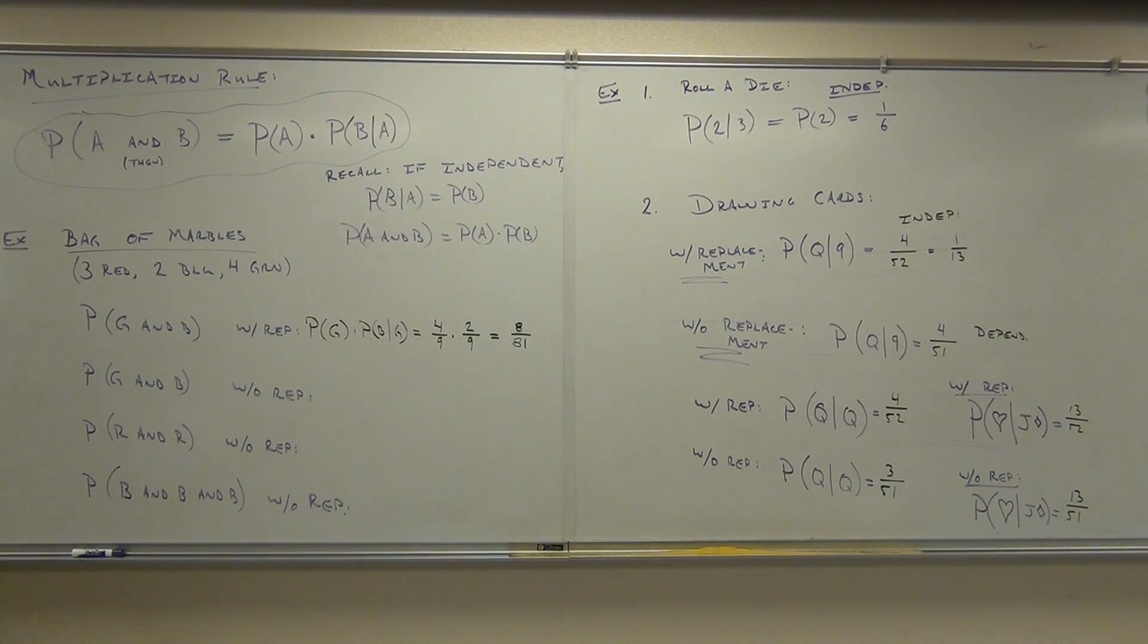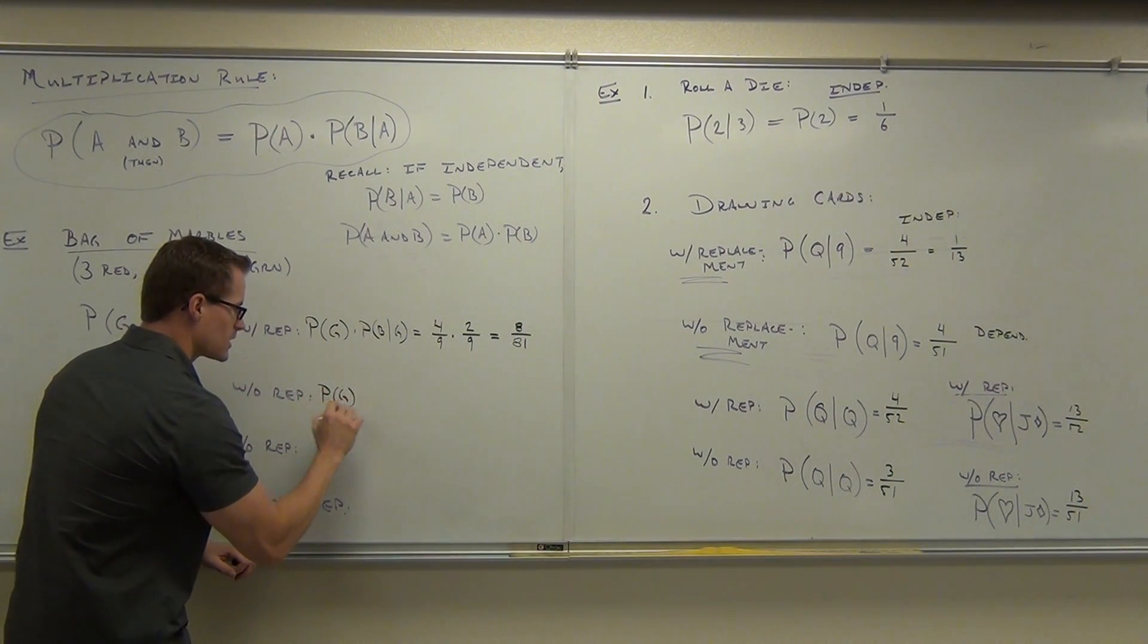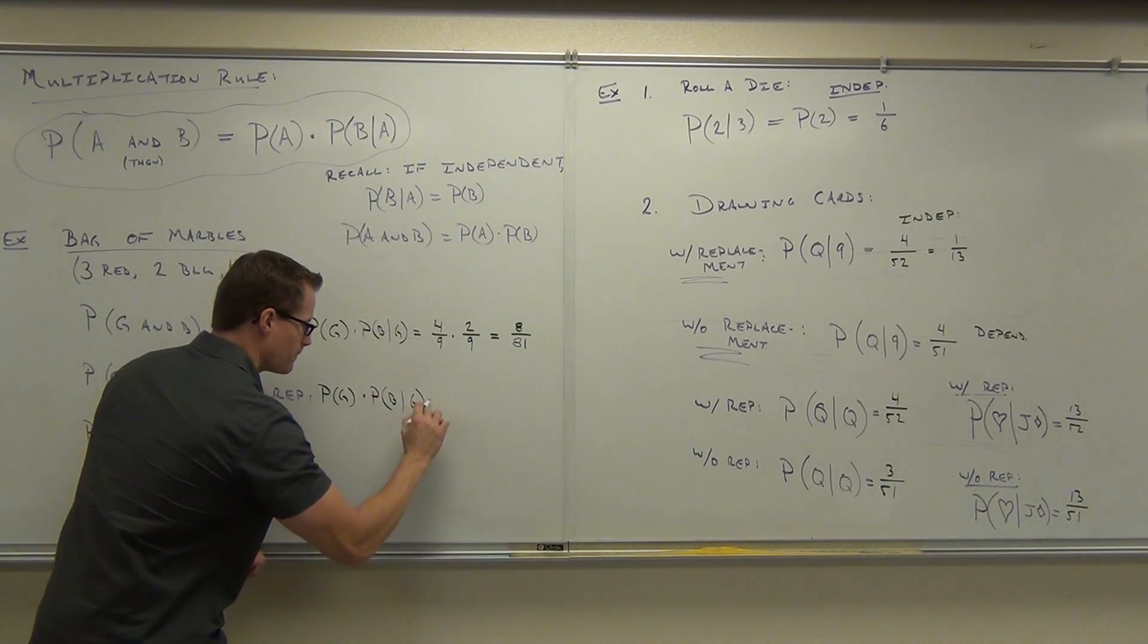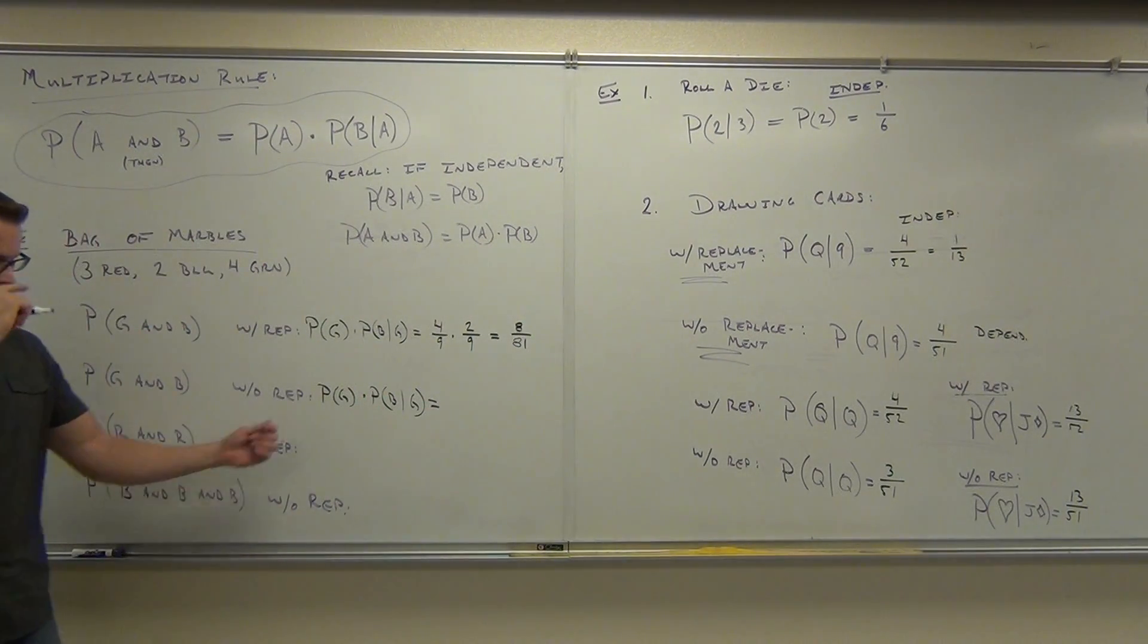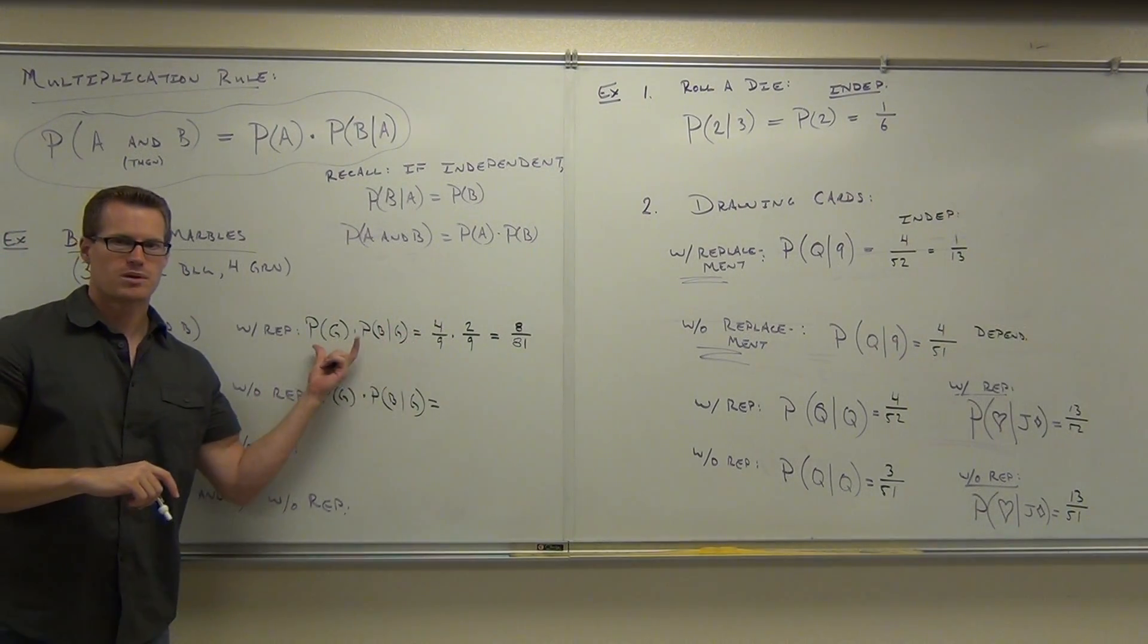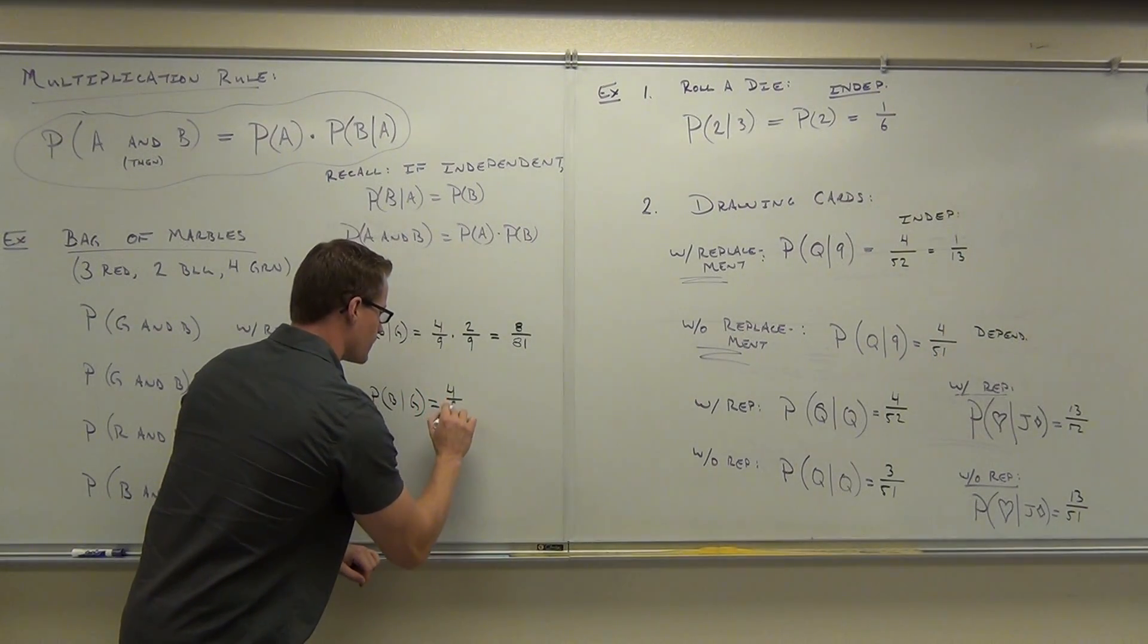Okay, let's do the green and blue without replacement. So this would be the probability. It's going to be identical. Probability of selecting a green times the probability of selecting a blue, given you just selected the green. What's the probability of selecting a green? Notice how this one's the same, right? Probability of green, that's just there. That's your first marble. That's not going to change.